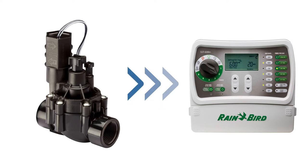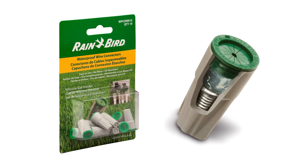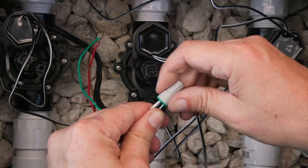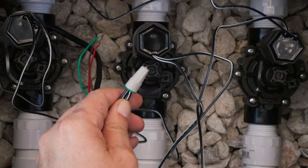Next, connect the solenoid to your sprinkler timer. Use watertight wire nuts to protect the connections from water. Connect the white wire on all solenoids to the common wire, which is also usually white.